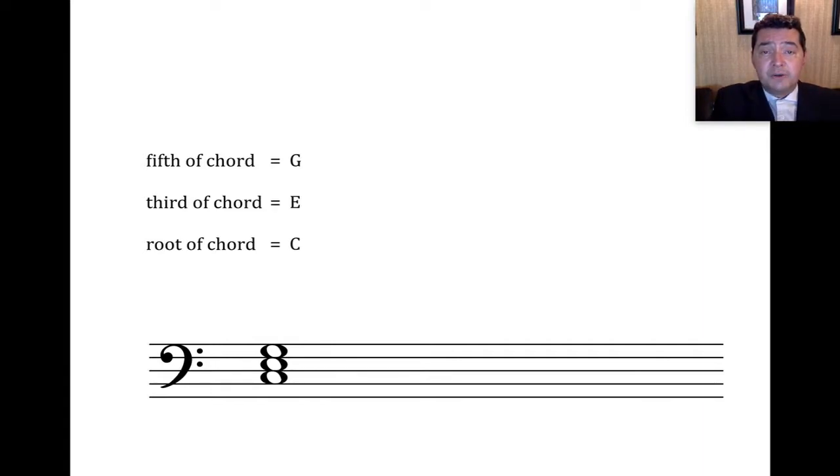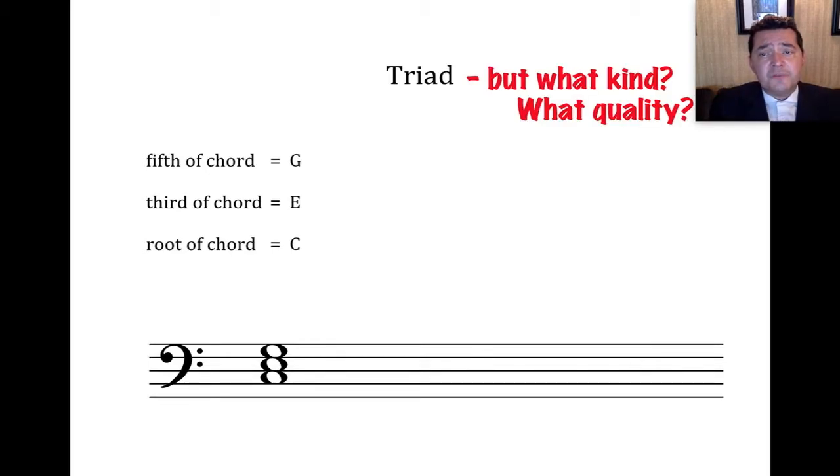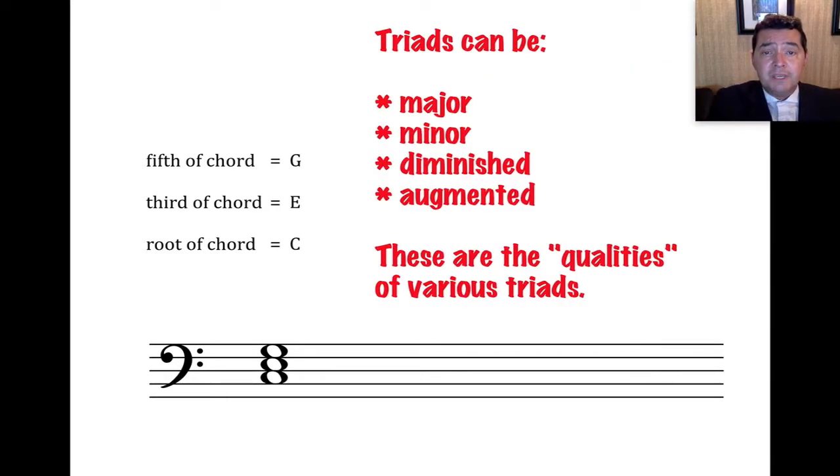So there are the notes in our triad. But wait, what kind of triad is it? What is the quality of the triad? Triads can have different qualities. By that, I mean major, minor, diminished, or augmented. These are the four possible qualities for a triad.